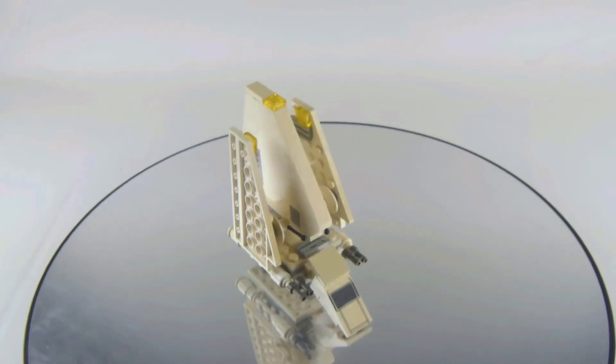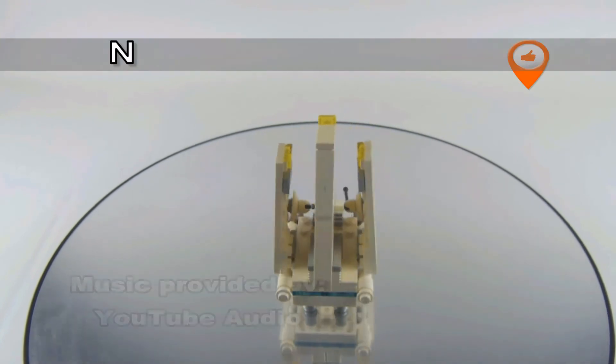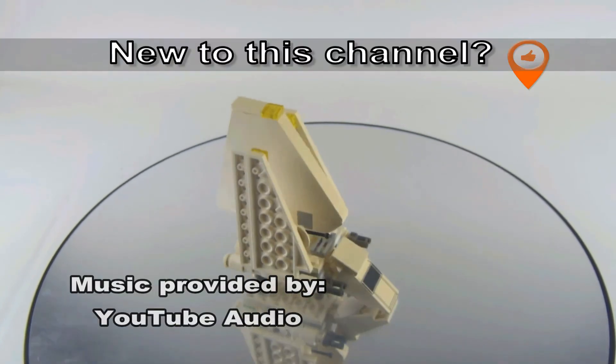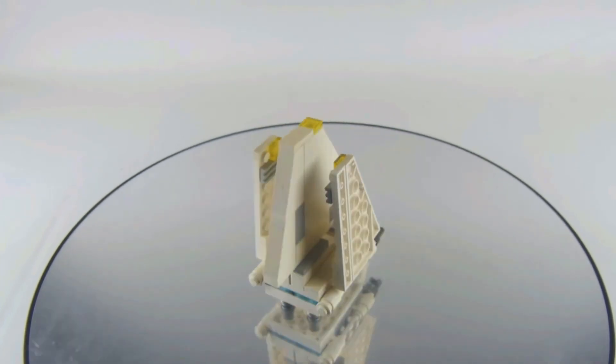In this video I'm reviewing another vintage Lego Star Wars set. Today I'm reviewing the Imperial Shuttle, set number 4494, which came out in 2004 and has 82 pieces.